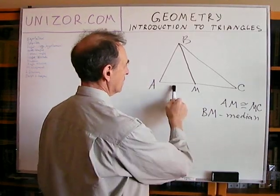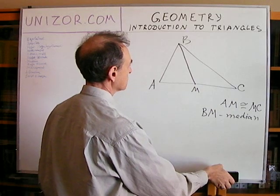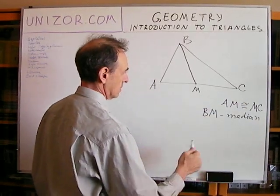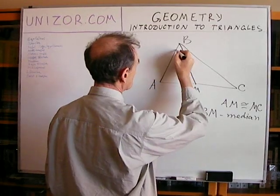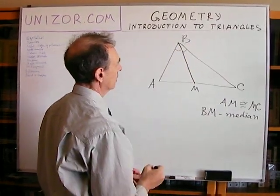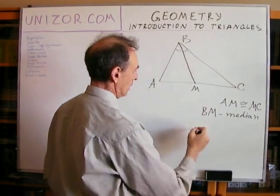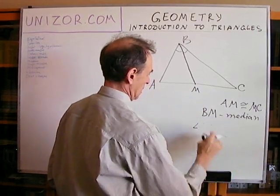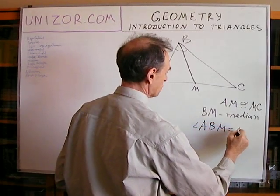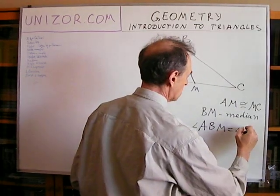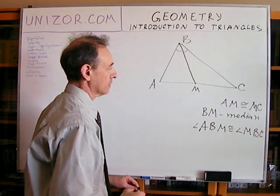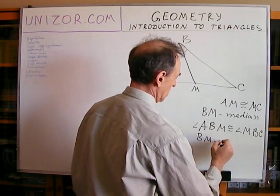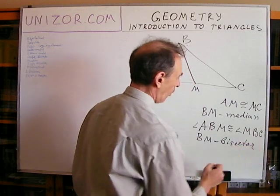Now, let's talk about the angle. What if instead of this, we will have these two angles the same, so BM is bisecting the angle. If angle ABM is congruent to angle MBC, then BM is bisector or angle bisector.